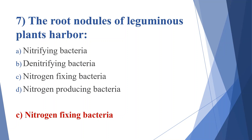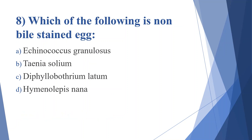Eighth question: which of the following is a non-bile-stained egg. Option A: Echinococcus granulosus. Option B: Taenia solium. Option C: Diphyllobothrium latum. Option D: Hymenolepis nana. Answer is option D, Hymenolepis nana.